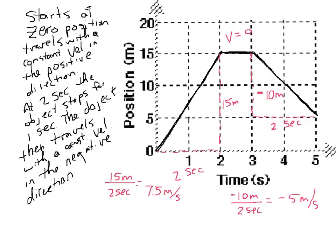Now that we see our velocities, I'd like to see what a motion map might look like for this kind of motion. With any motion map, we indicate where the zero position is and where the positive direction is. Because the start position is at zero at time zero, on our motion map we will indicate that the object is starting at the zero position and it has a velocity of 7.5 meters per second in the positive direction. We'll indicate that with an arrow of that length.